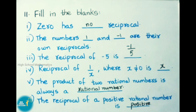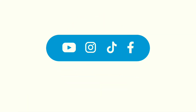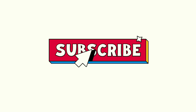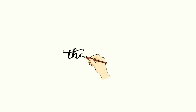Today we have seen Chapter 1 Rational Numbers, Exercise 1.1, sums 5 to 11. Hope you all liked this video. If you like this video, please like, share it with your friends, and subscribe to our channel. Thank you for watching.